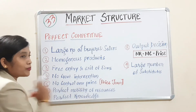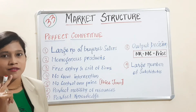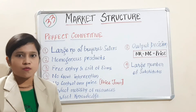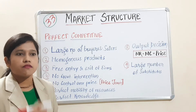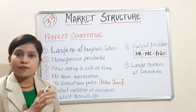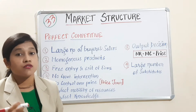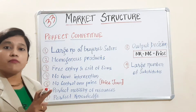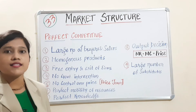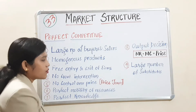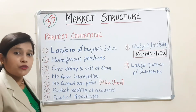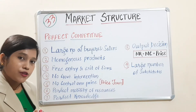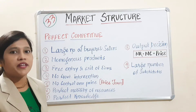Next is no control over price. Because there are many sellers, no single seller can control the price. If one seller intentionally increases the price to get more profit, all buyers will switch to other sellers. Reversely, if a seller decreases the price to attract all customers, they will be removed from the market because the marketing committee decides the price that all sellers must charge. That is why sellers in a perfect competitive market are called price takers.